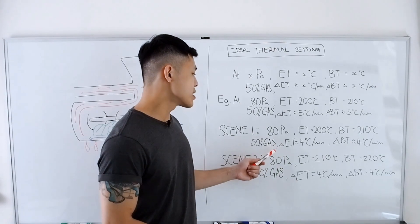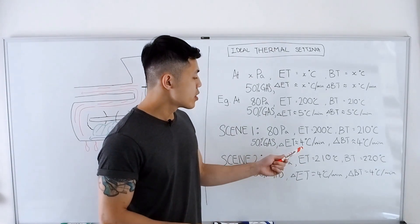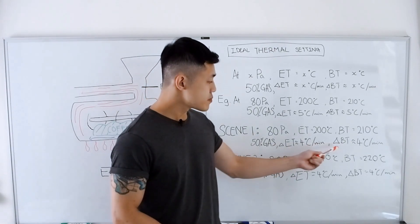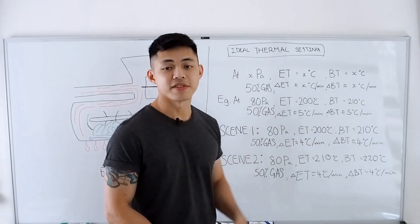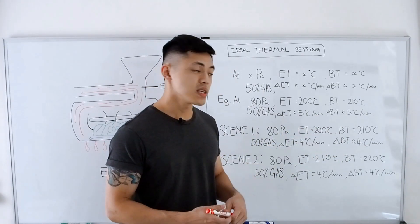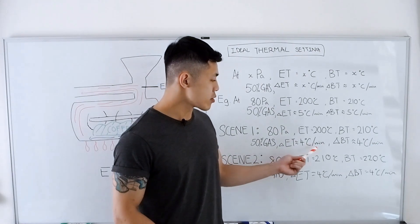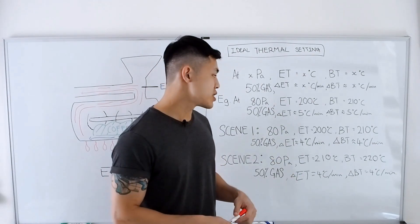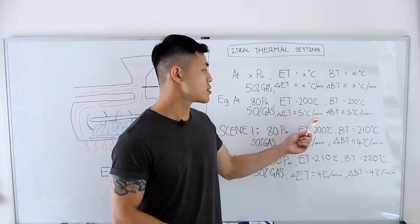So in this case we want to make sure that we can bring this up to the ideal thermal setting, which is 5 degrees Celsius per minute. In order to do this, we need to continue heating up the roaster until the thermal energy is high enough to hit our ideal thermal settings.